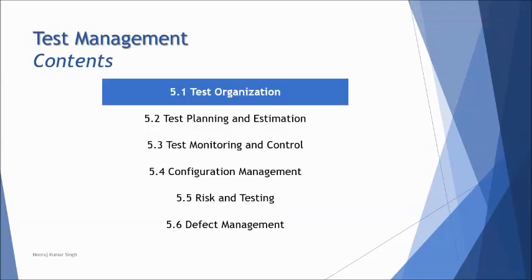In chapter 5, the topics we'll be looking at include: test organization — what it comprises of and the tasks and responsibilities; test planning and estimation; test monitoring and control, which we already discussed in chapter 1; configuration management, a small topic about version control; risk and testing as an introduction to risk and its role in the process, covering project risk and product risk; and defect management, covering how we manage and track defects and understand the defect report.